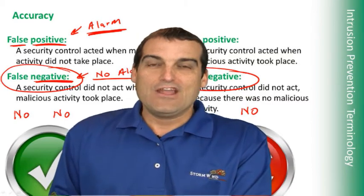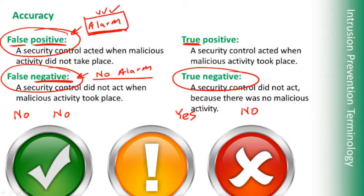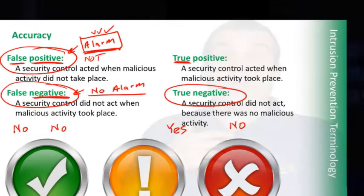You know what happens when people really go crazy with intrusion prevention systems? They get a lot of false positives. Alarms fire like crazy, and it is not a good thing. This means their intrusion prevention system is going berserk, throwing alarms for normal, benign, safe traffic.